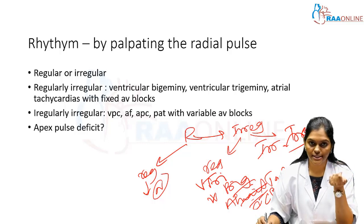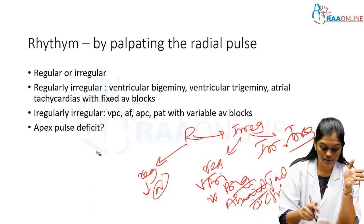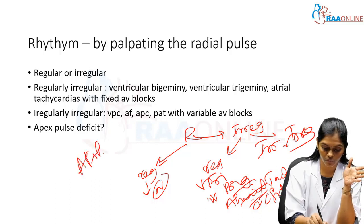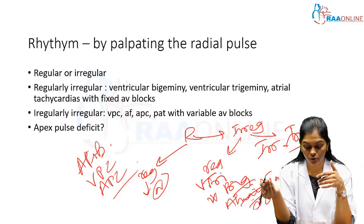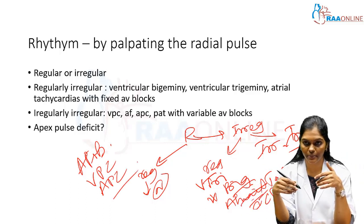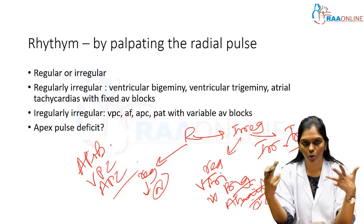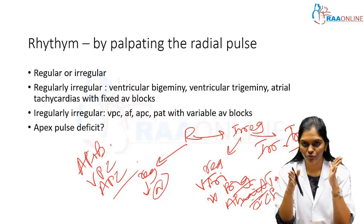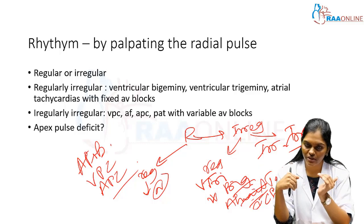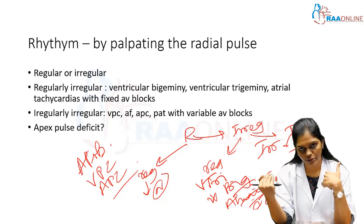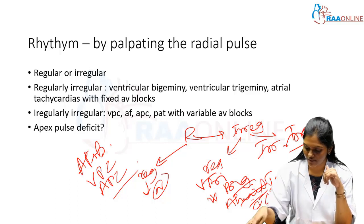Irregularly irregular rhythm is most commonly atrial fibrillation, but also includes ventricular premature complexes, atrial premature complexes, and paroxysmal atrial tachycardias with variable AV blocks. When you detect an irregular beat and suspect AF, you need to differentiate it from a ventricular premature complex — this is where the apex pulse deficit comes into play.